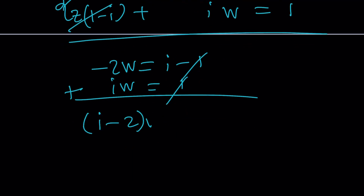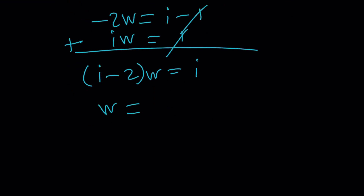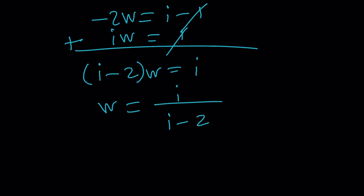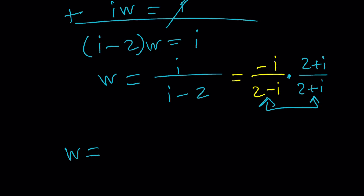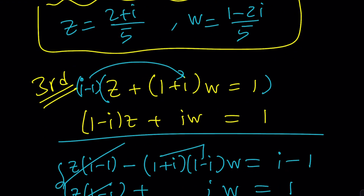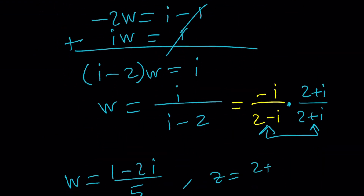After canceling Z, we get negative 2W equals I minus 1 and IW equals 1. Adding these equations, 1 cancels and we get I minus 2 times W equals I, so W equals I over I minus 2. The conjugate of I minus 2 changes the imaginary part, so write it as negative I over 2 minus I, then multiply by 2 plus I over 2 plus I. We get negative 2I minus I squared, which is 1 minus 2I, divided by 5. Then by substitution, Z equals 2 plus I over 5. Same answers as before.